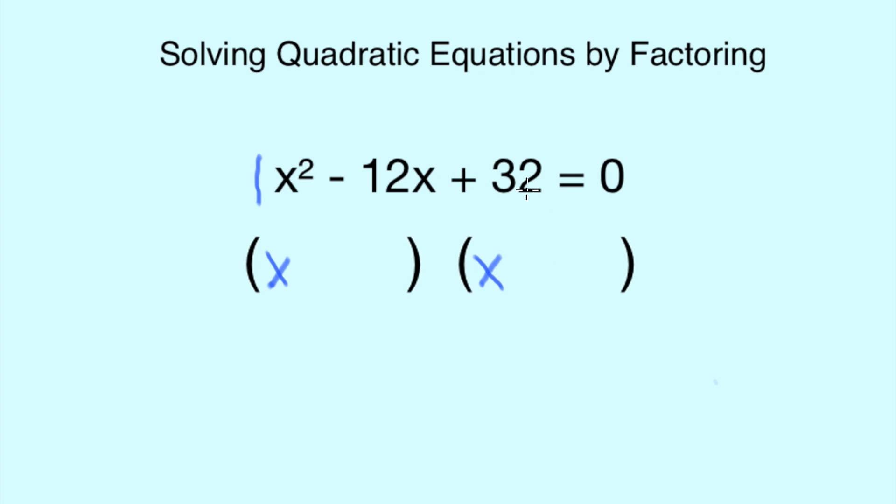We now need to work out what two figures will be added together to make -12 and also multiplied to create +32. The answers to that are 4 and 8, because -4 and -8 will come to -12, and -4 times -8 will come to 32.